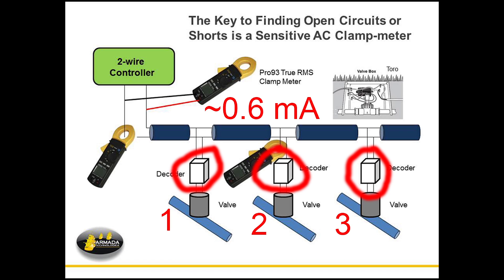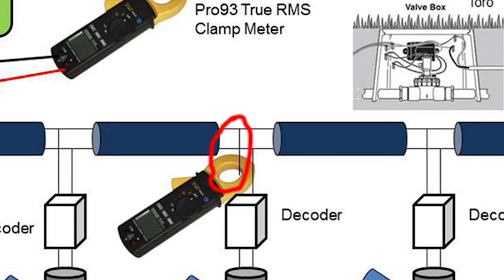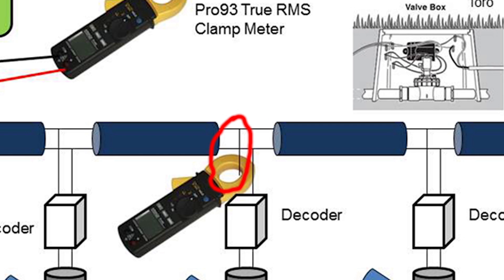As you test, as we see here in the third Pro93, you're going to test on one leg of the two-wire system wiring that comes into the decoder. You don't want to test both wires because it tends to cancel itself out—you get zero for a reading. So you're going to test on one side and take a milliamp reading on the inbound of that decoder.